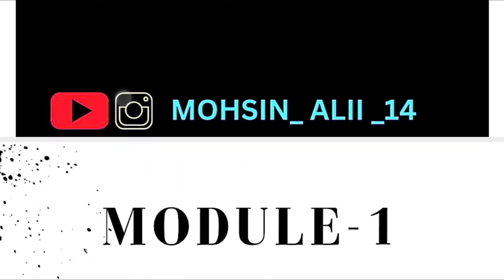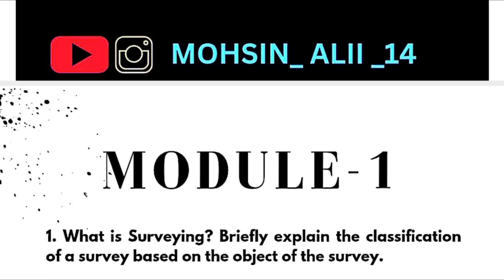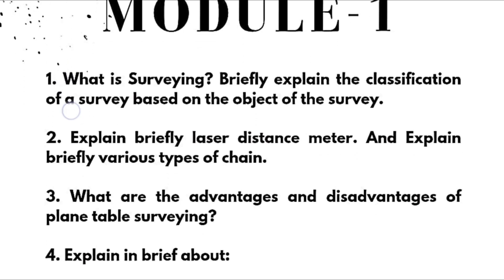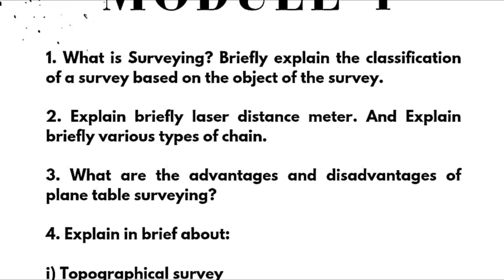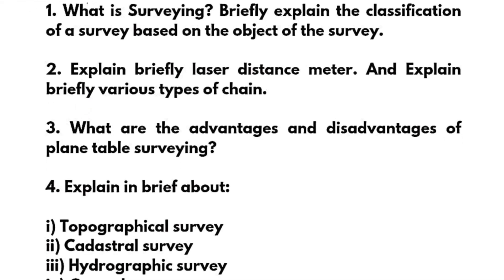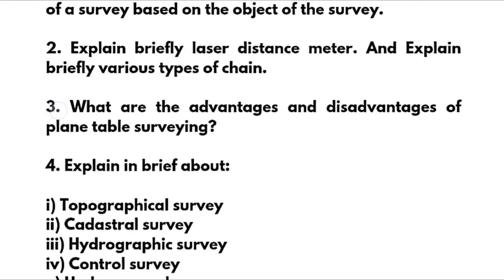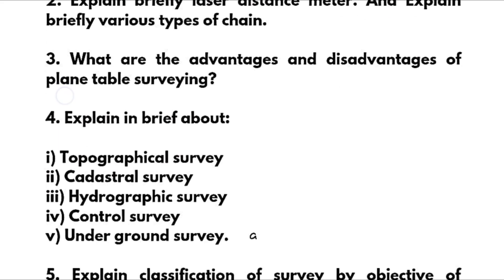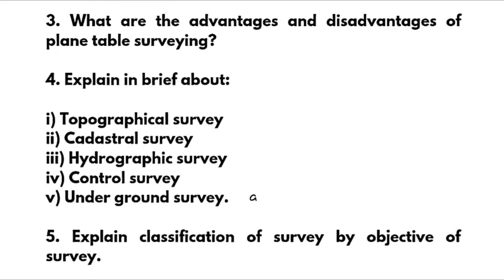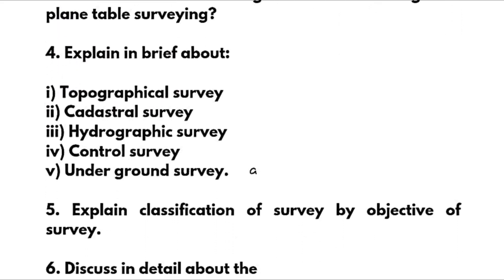Module 1, Module 3, and Module 5 are the passing modules. In Module 1, the super important questions include: What is surveying? Briefly explain the classification of survey based on the object of the survey. Explain briefly laser distance meter. Explain briefly various types of chain. What are the advantages and disadvantages of plane table surveying?